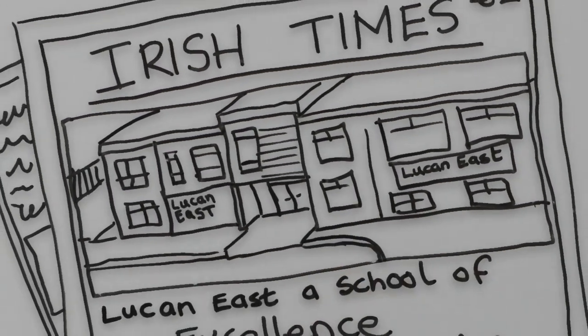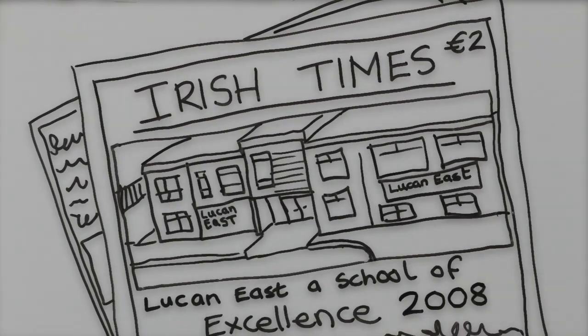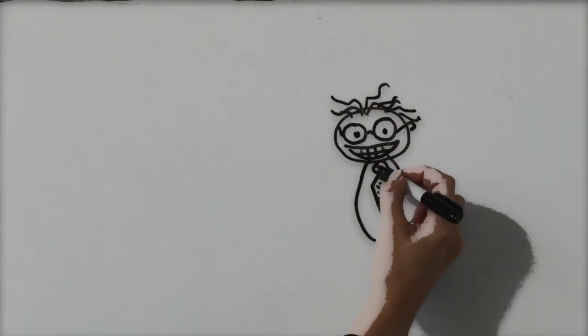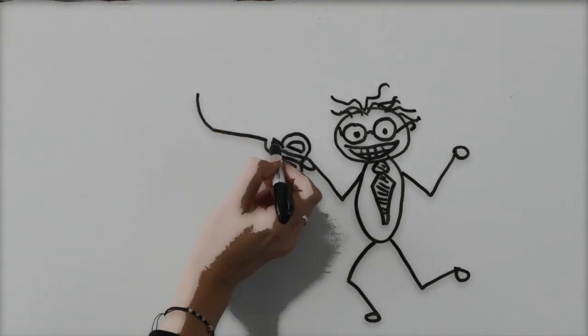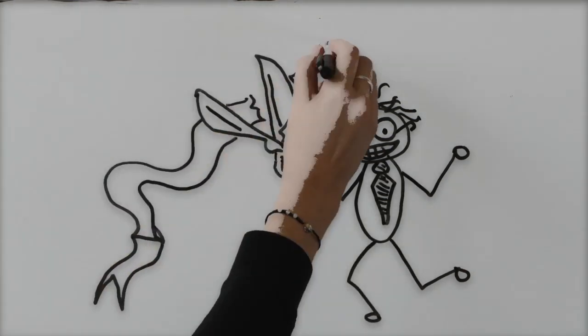Lucan East Educate Together National School made the headlines straight away, with the Minister for Education at the time, Batt O'Keeffe, attending the school to mark its official opening.